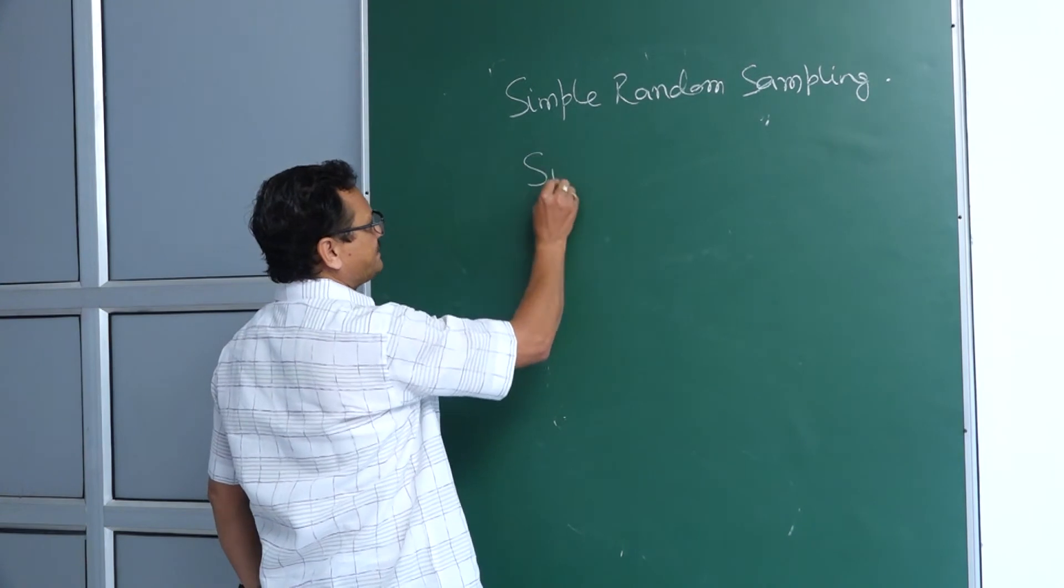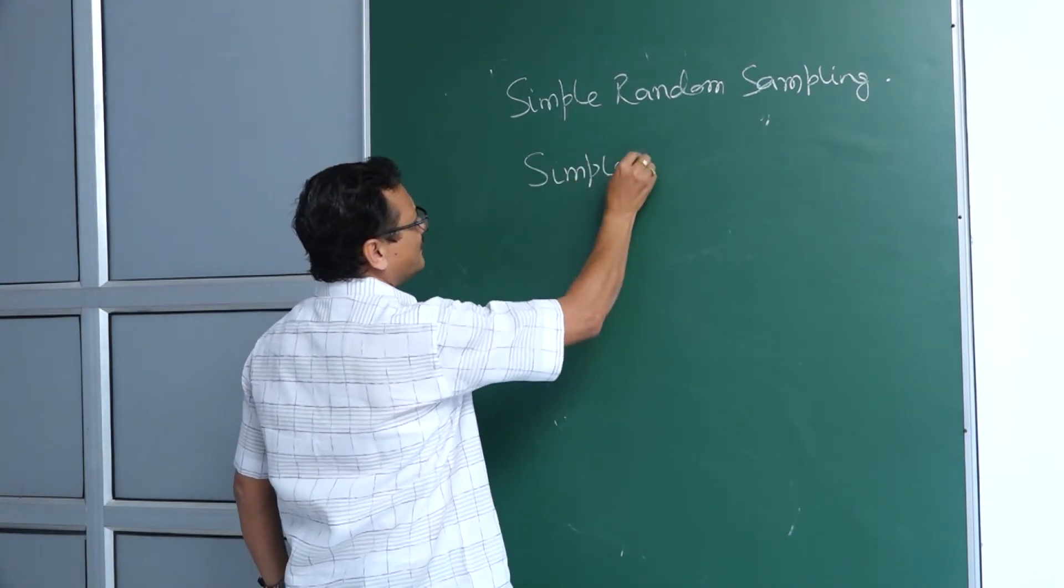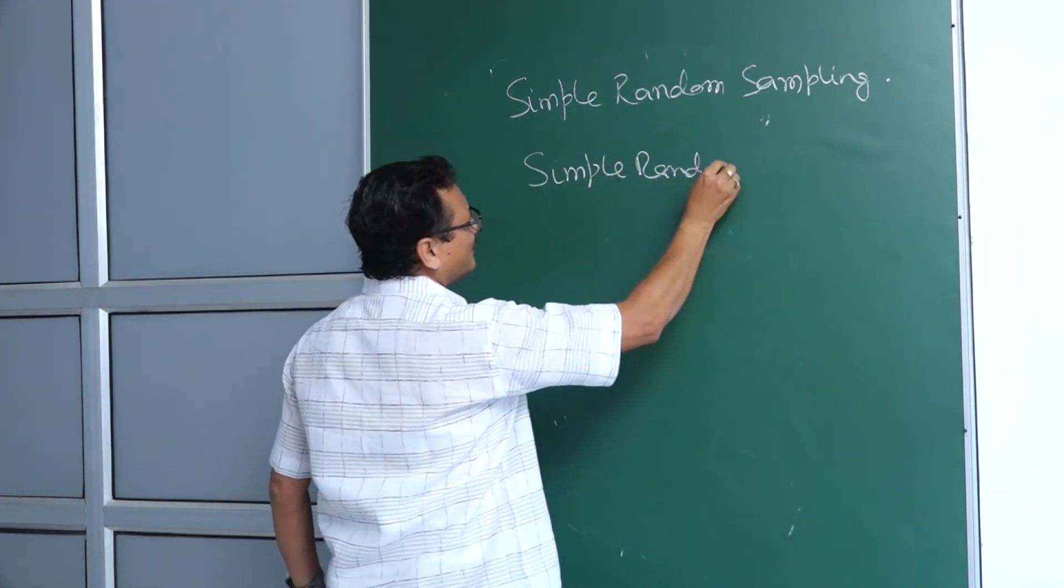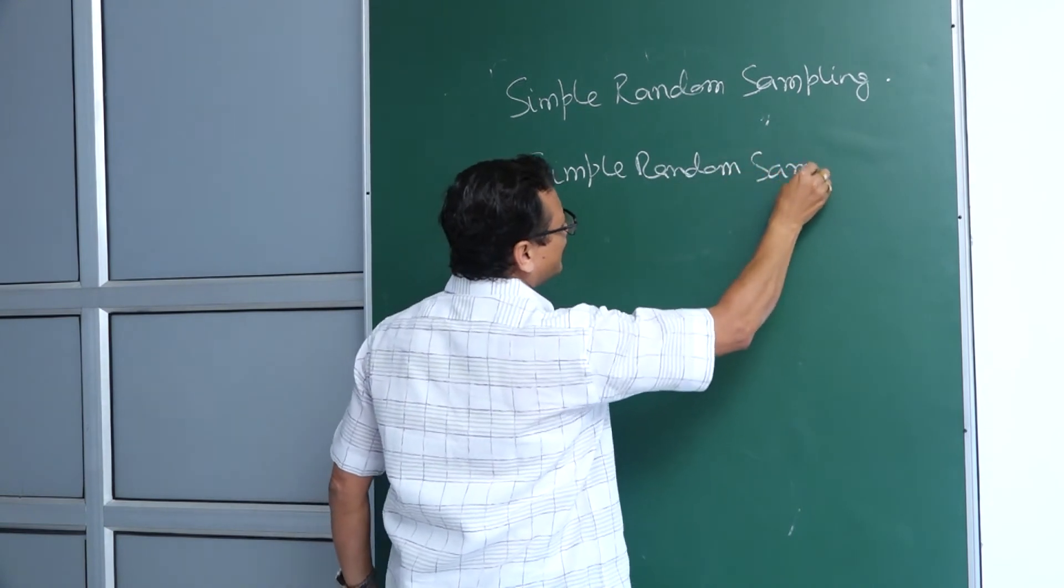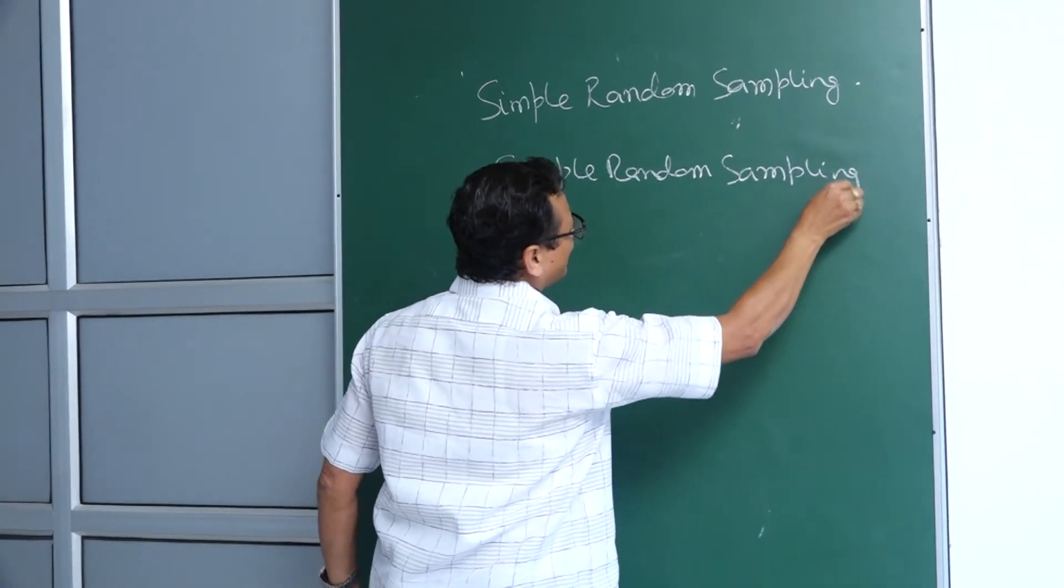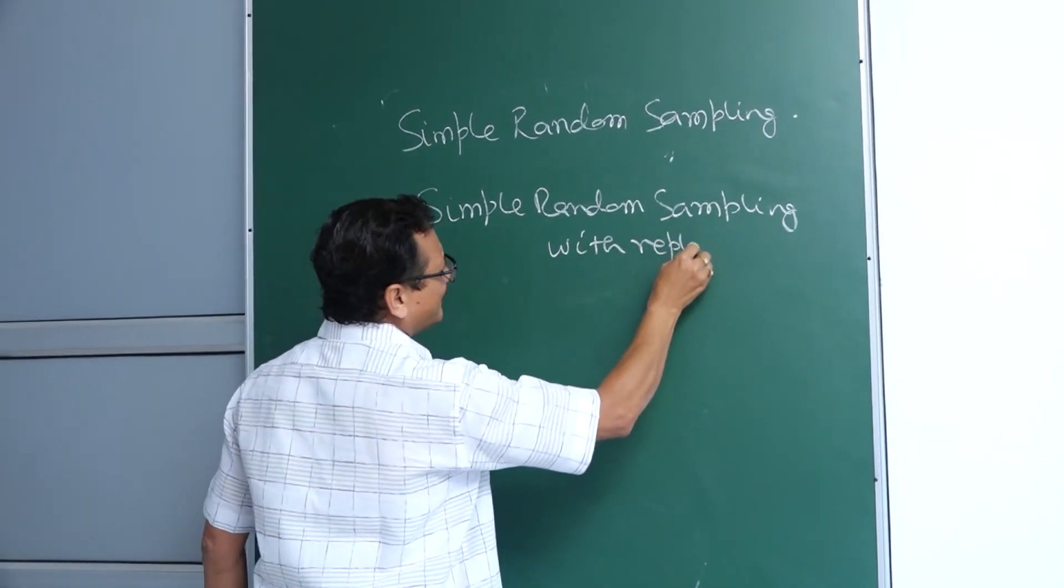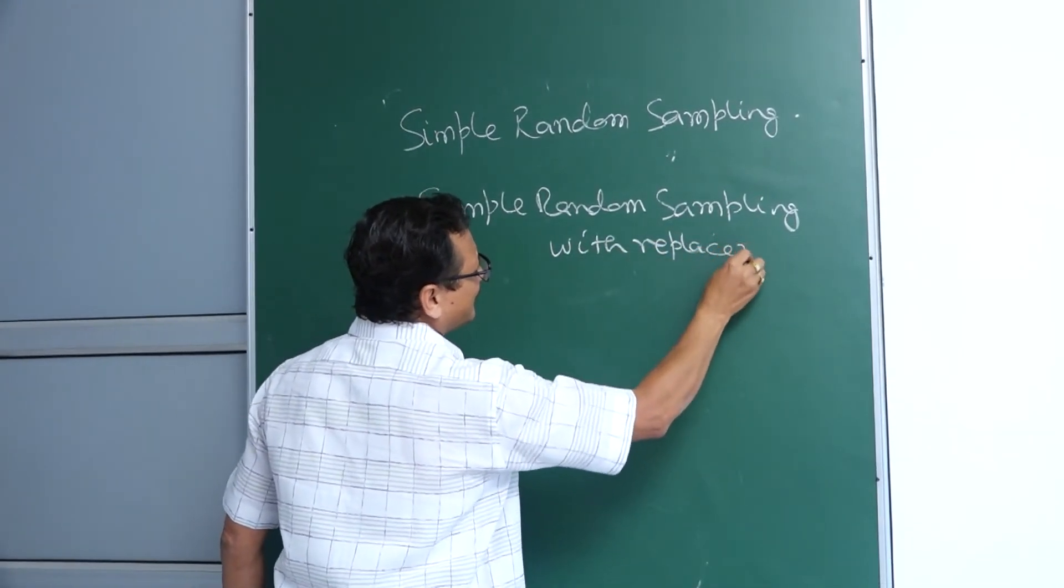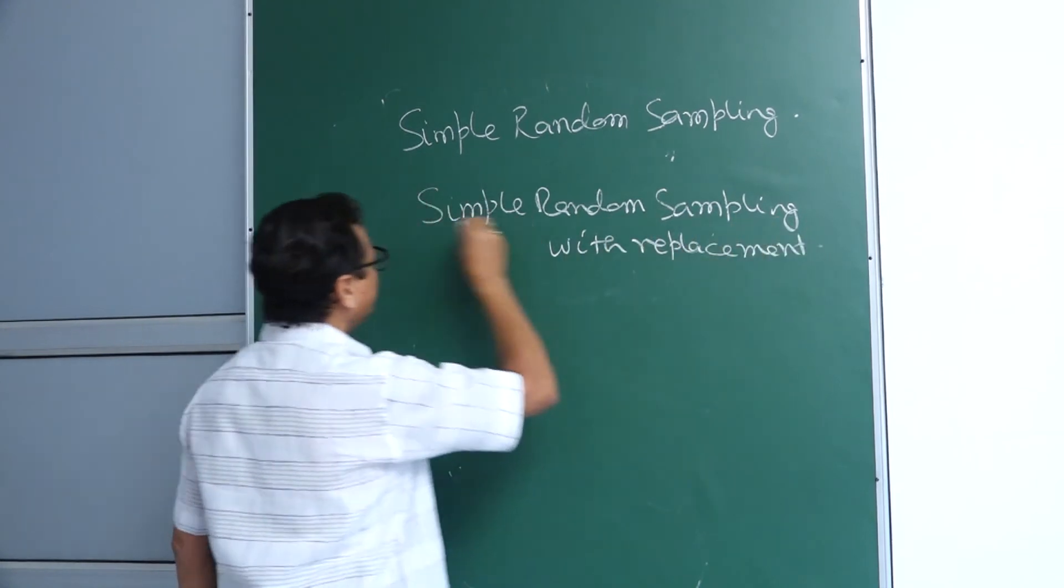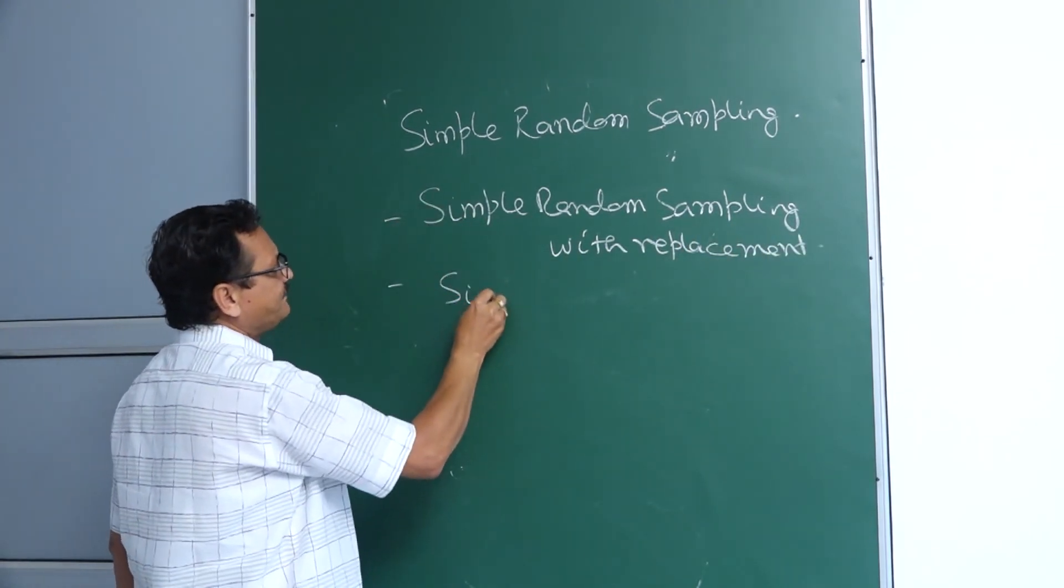There are two types: simple random sampling with replacement and simple random sampling without replacement.